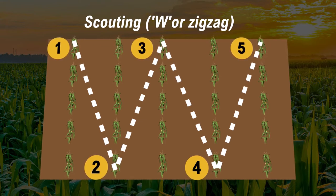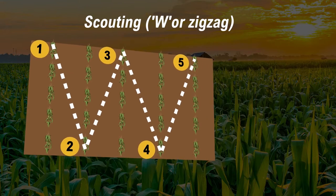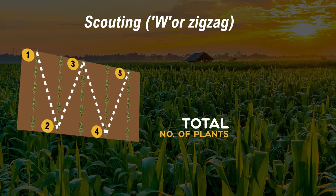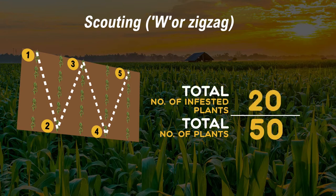At the second station you again count the number of infested plants and record them. You do the same for all five stations to get the total number of infested plants in the field. From there you take the total number of infested plants out of 50 to get the percentage of pest infestation in the field.